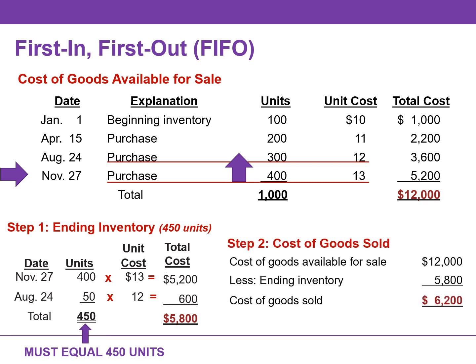We calculate the cost of goods sold by subtracting the cost of the units not sold, or ending inventory, from the cost of goods available for sale. In this example, we had $12,000 of goods available for sale. Of that $12,000, we assigned $5,800 to our ending inventory, which means $6,200 will be assigned to the cost of goods sold.